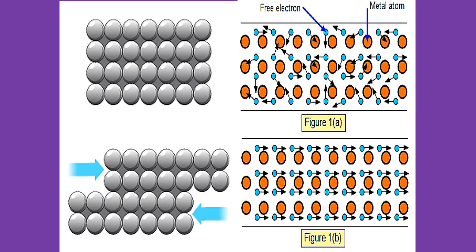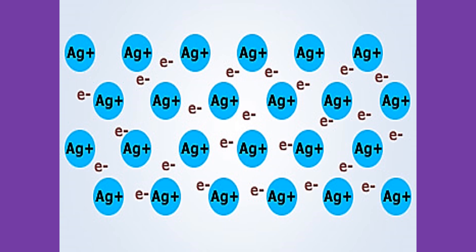As you can see in both figures, the metal atom is stationary, while electrons can freely move. It is also the reason why metals can easily conduct heat and electricity.